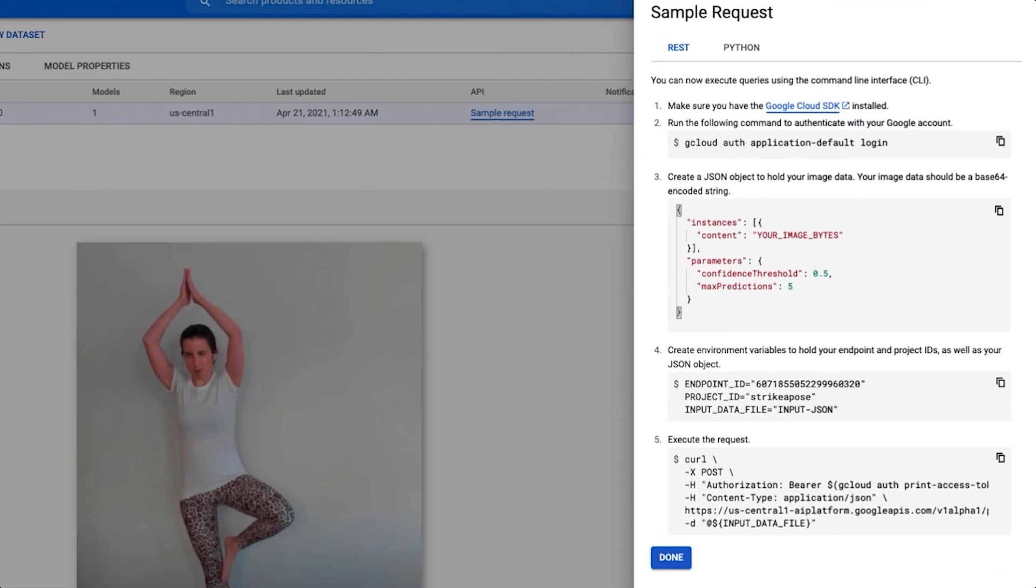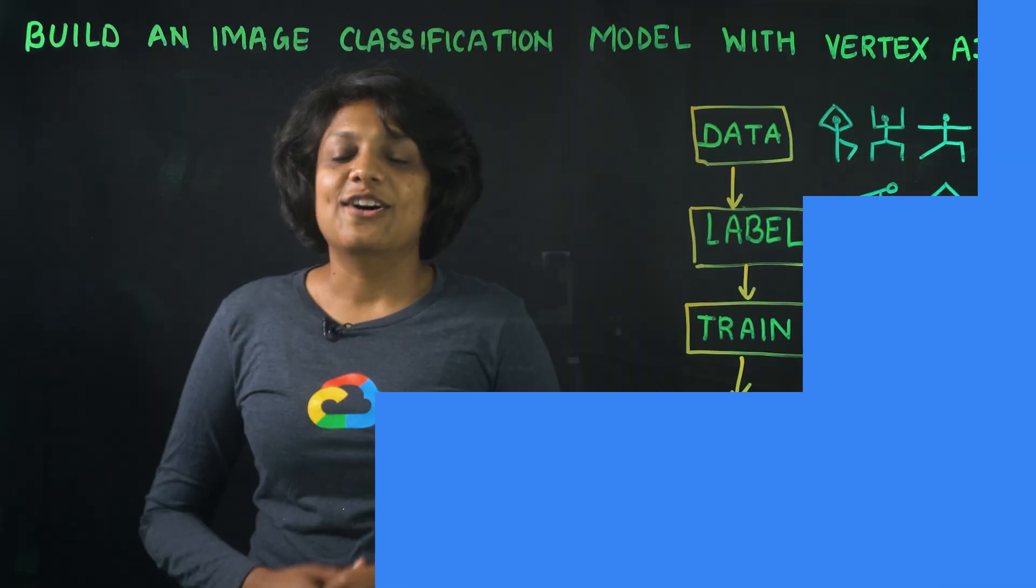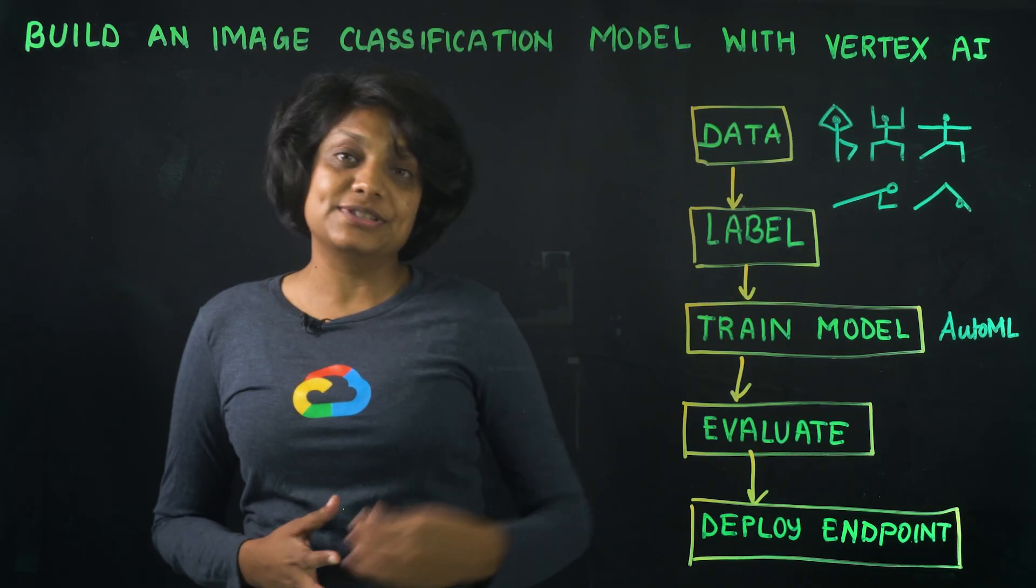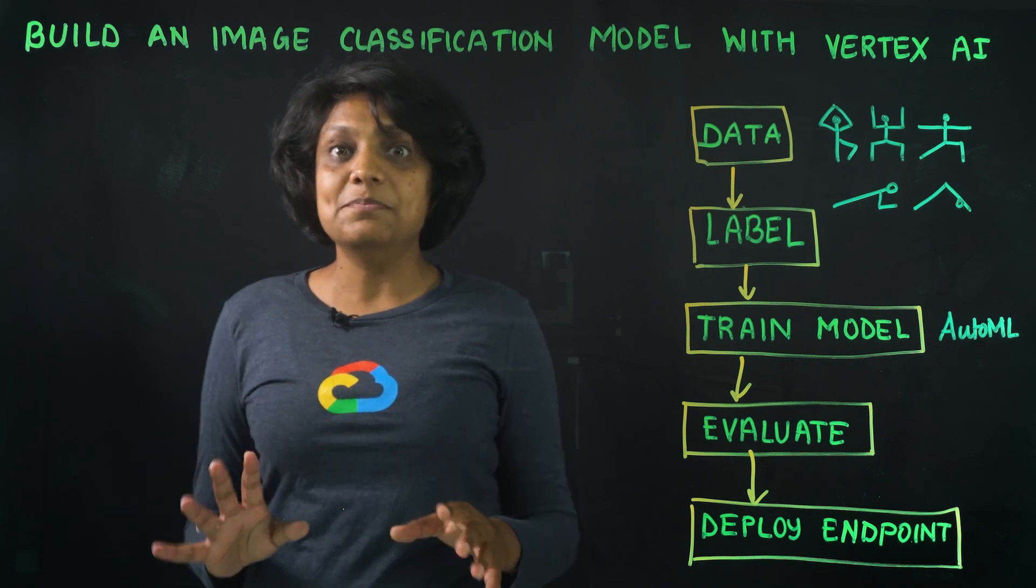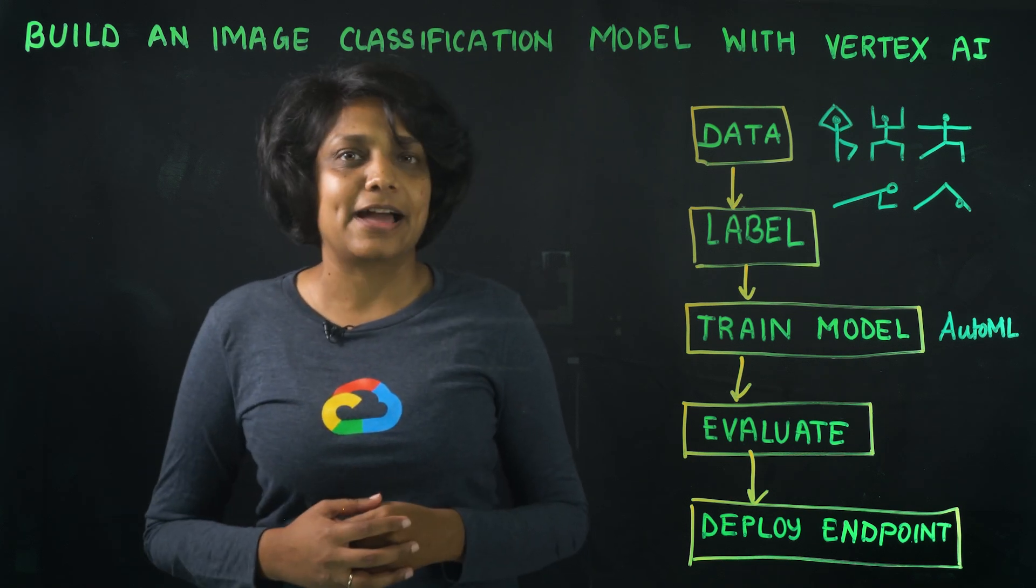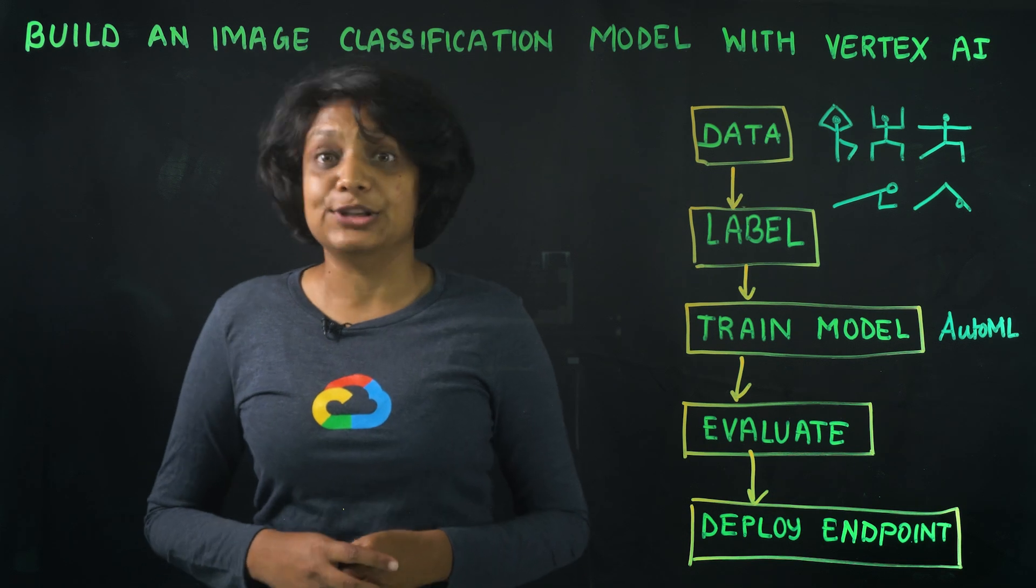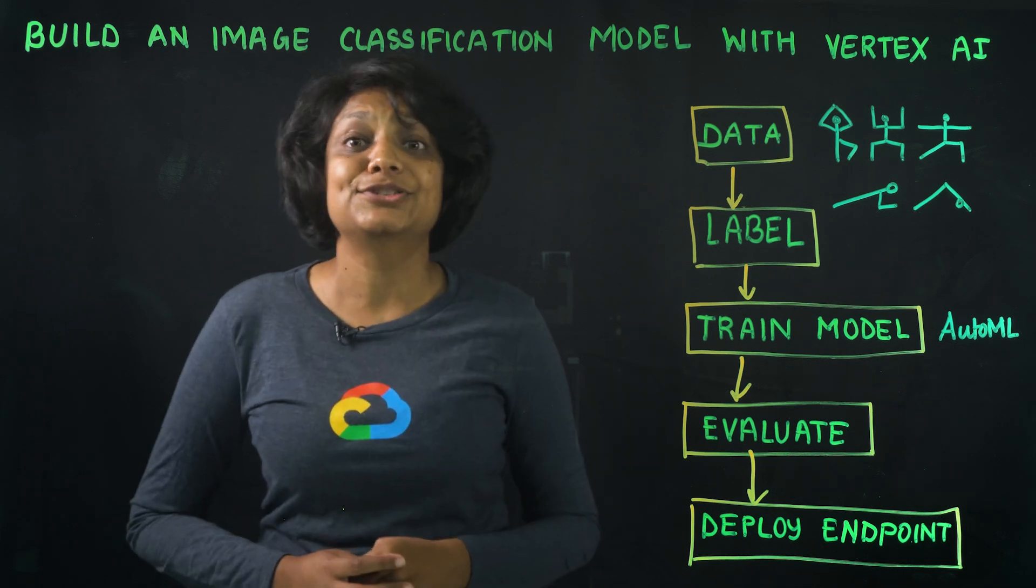You can also make predictions using the SDK. All right, so today we created a yoga pose classification model where we uploaded our datasets in Vertex AI, labeled our images in the UI, and then used AutoML to train our model.